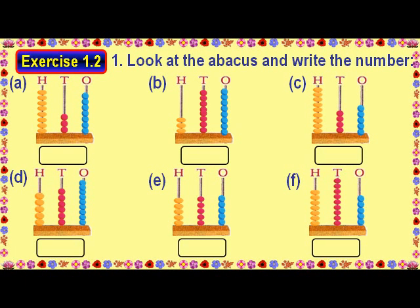Exercise 1.2, Question 1: Look at the Abacus and write the number. Answer A: 8 beads in the 100s place stand for 800, 3 beads in the 10s place stand for 30, and 7 beads in the 1s place stand for 7. So the required number is 837. Answer B: 3 beads in the 100s place stand for 300, 8 beads in the 10s place stand for 80, and 8 beads in the 1s place stand for 8. So the required number is 388.